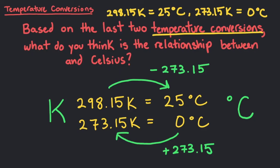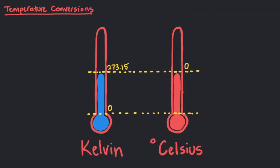Let's look at the two units side by side on a thermometer. We can see that the only difference between these two scales is the zero points of the thermometer. The zero point on the Celsius scale is defined as the freezing point of water, which means there are higher and lower temperatures around it.